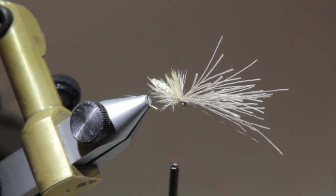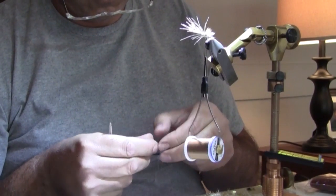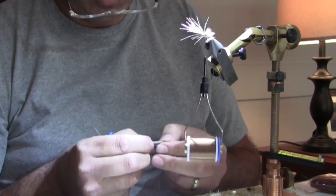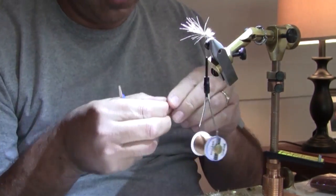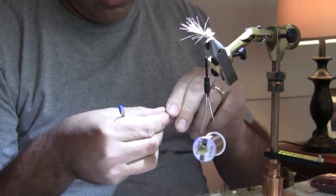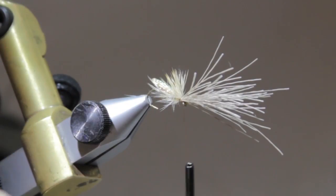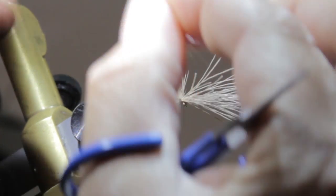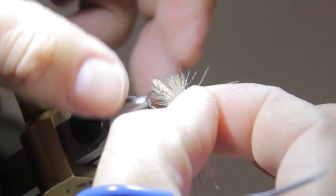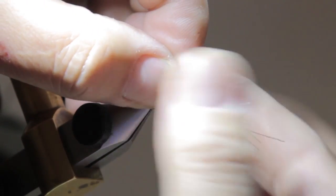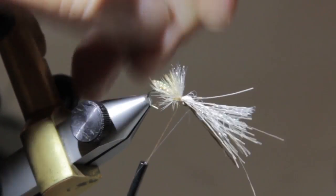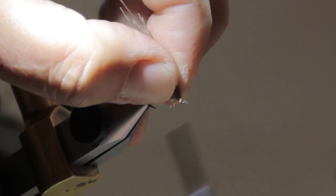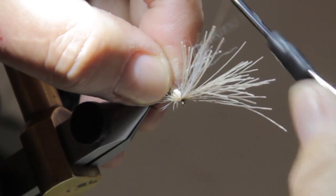Now we need a little antron. Don't use a full hank of it, just thin it out a little bit. You're just going to add a little bit of flash and shimmer on top of the fly. I'm going to lay this in here and get it just about the same length as the wing. Get a loose wrap over the top and snug it down. Pull all this back.